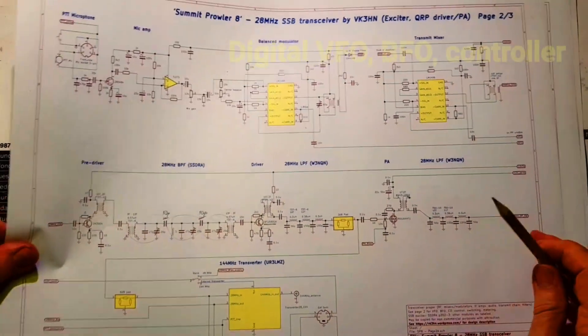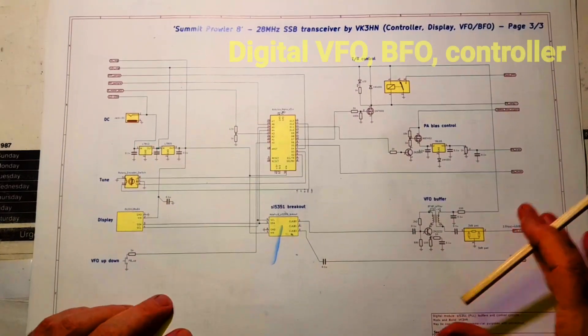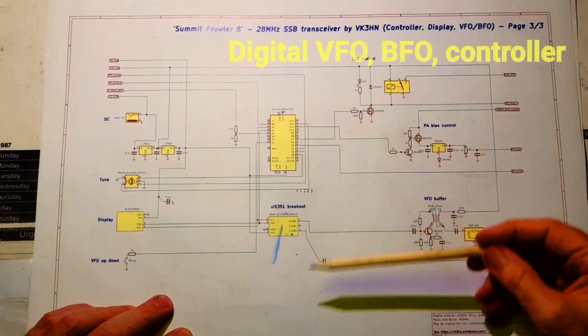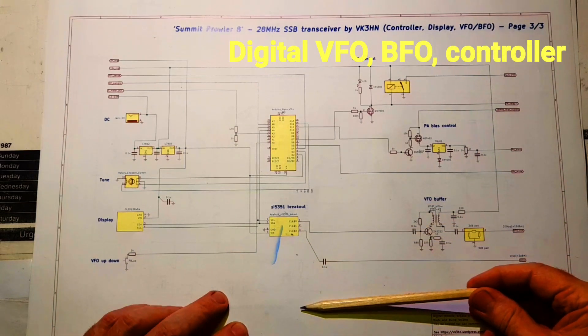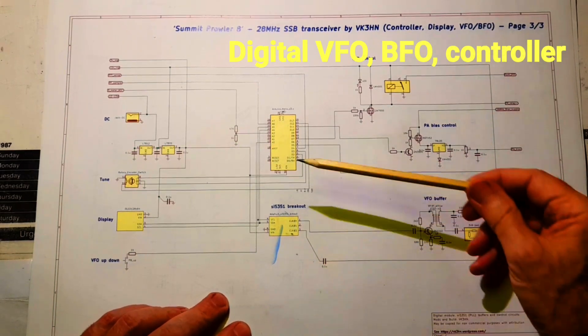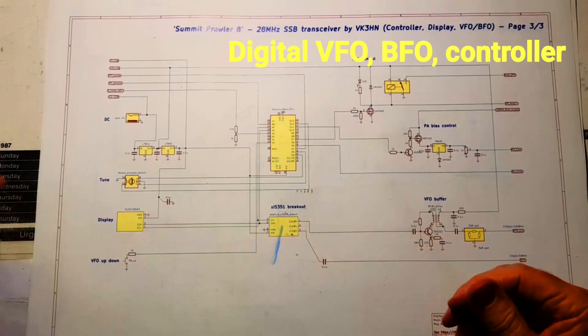Let's have a look now at the digital and control parts of this transceiver. It's very similar to the Arduino of the Bitex and Microbitex. That's my basic pattern here. So it's a nano, an SI5351 breakout.